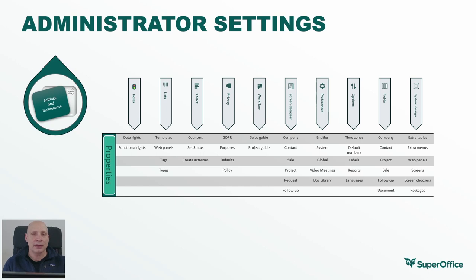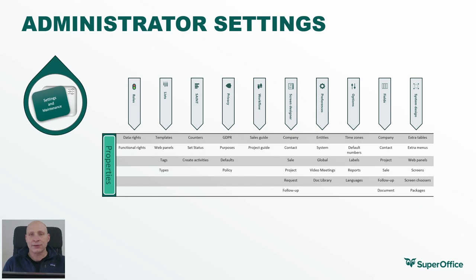The Fields screen is where you define custom fields that extend the default fields available on all primary entities such as company, contact, project, sale, follow-up, and document. The System Design area exposes functionality that used to only exist inside the service module, but today it's used to create custom tables and even more custom fields on the existing entities — I'll talk more about that in the next section. All of these settings are documented, and many have videos about what they are and how to use them on docs.superoffice.com.